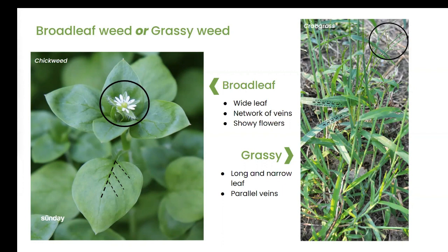When it comes to grassy weeds, it's a little bit different. The grassy weed has a long and narrow leaf, and those veins run parallel to the leaf, versus the network of veins you see in broadleaf weeds. We have an image of crabgrass here. Something we use to identify what kind of grassy weed you're dealing with — because they all kind of look alike — is that seed head you see in the circle. That gives us an indication of what kind of grassy weed we're dealing with.